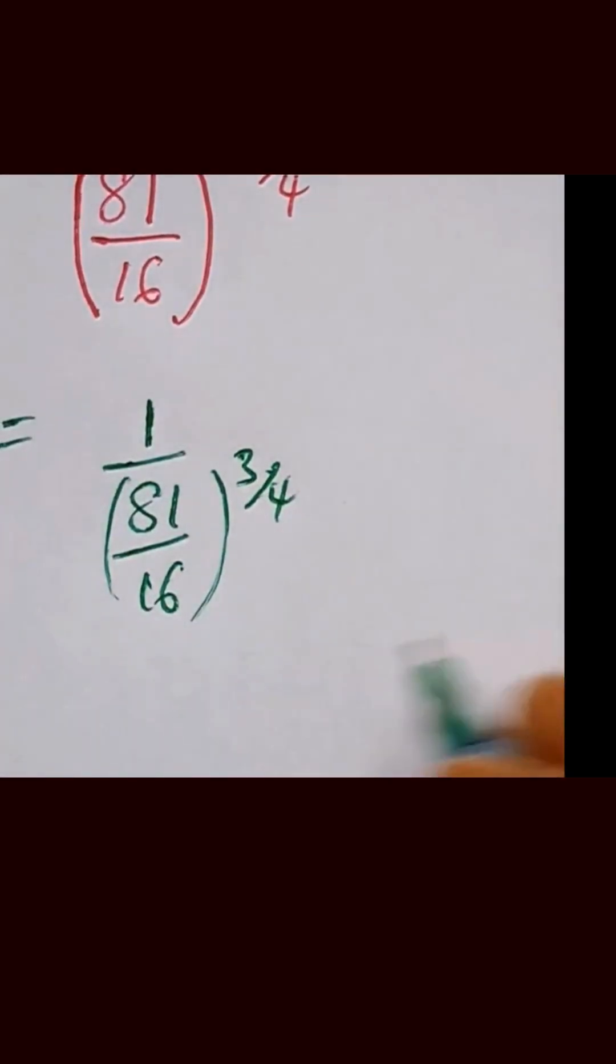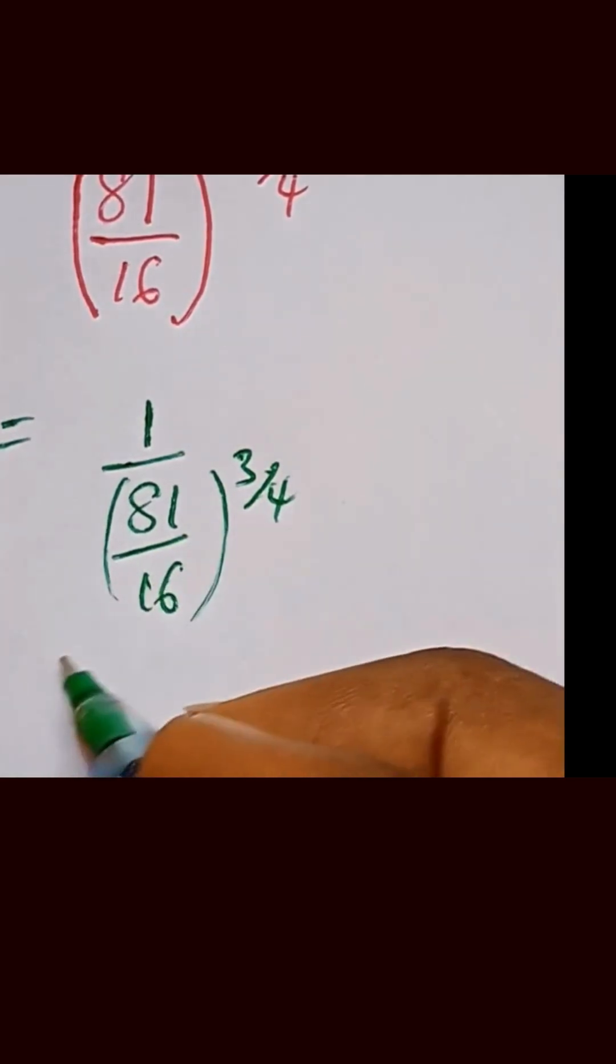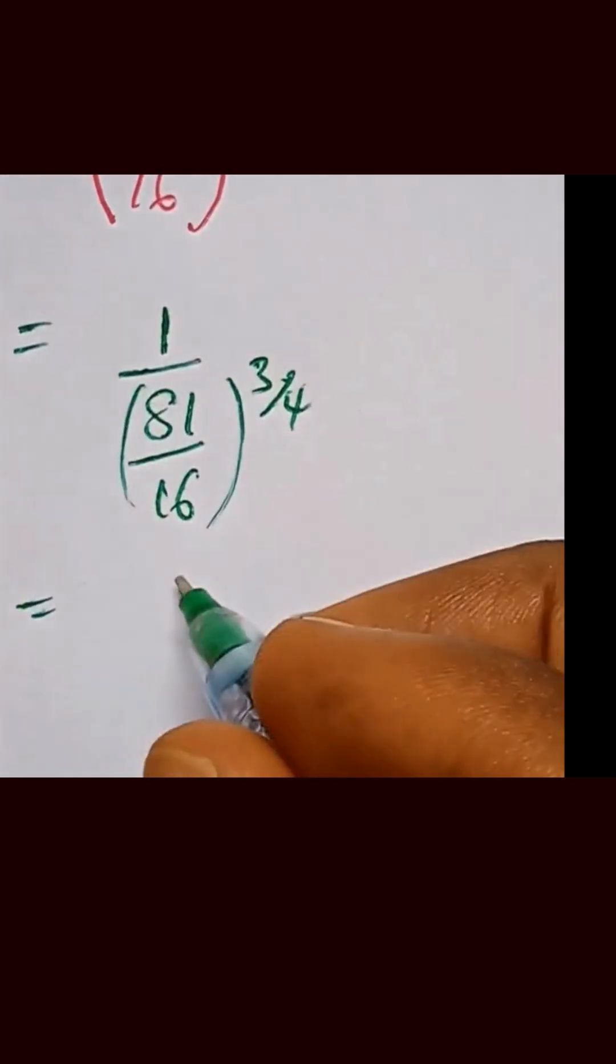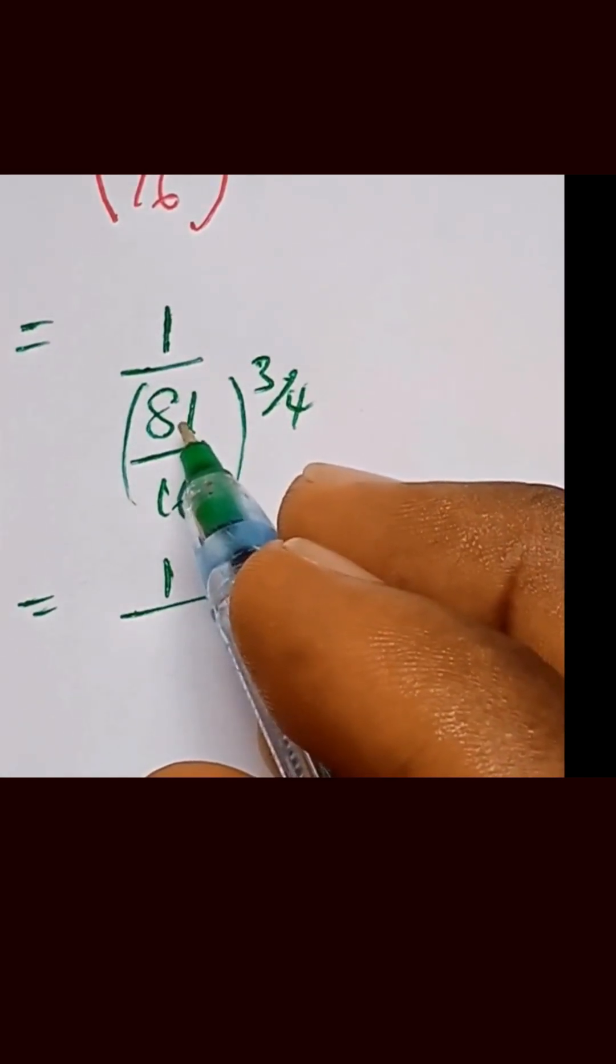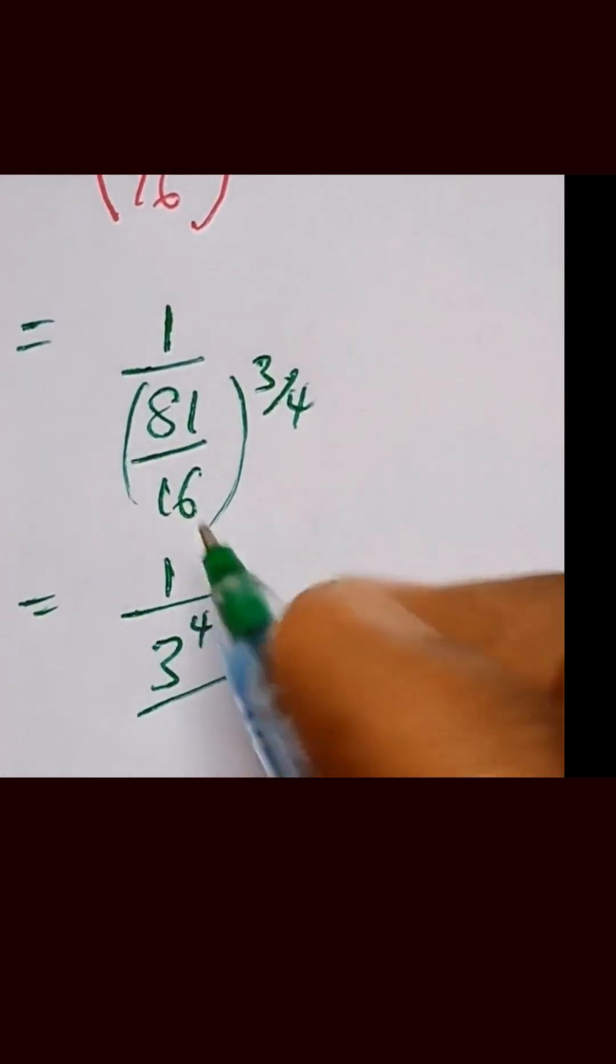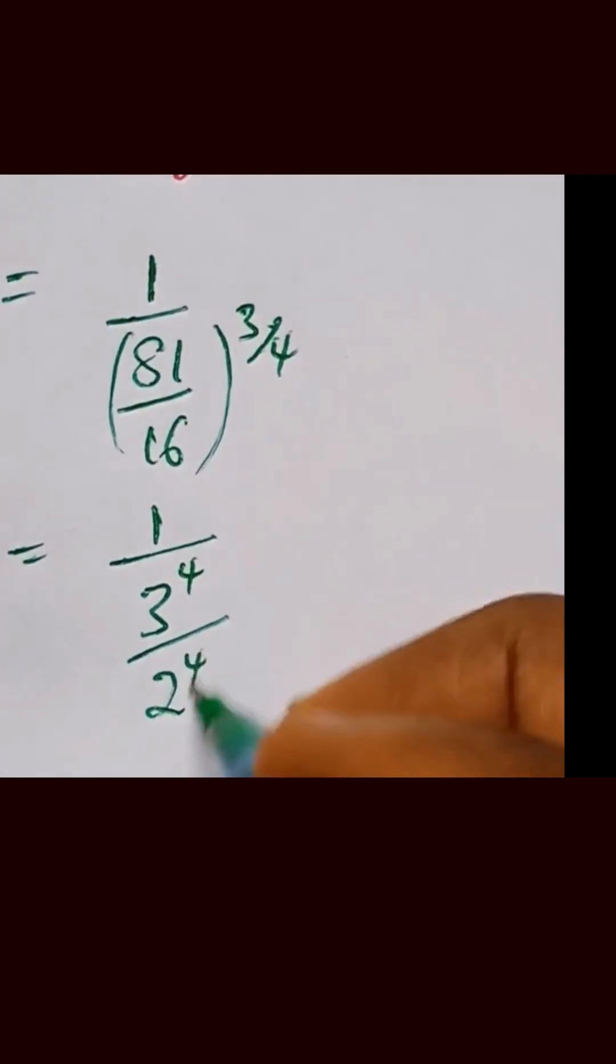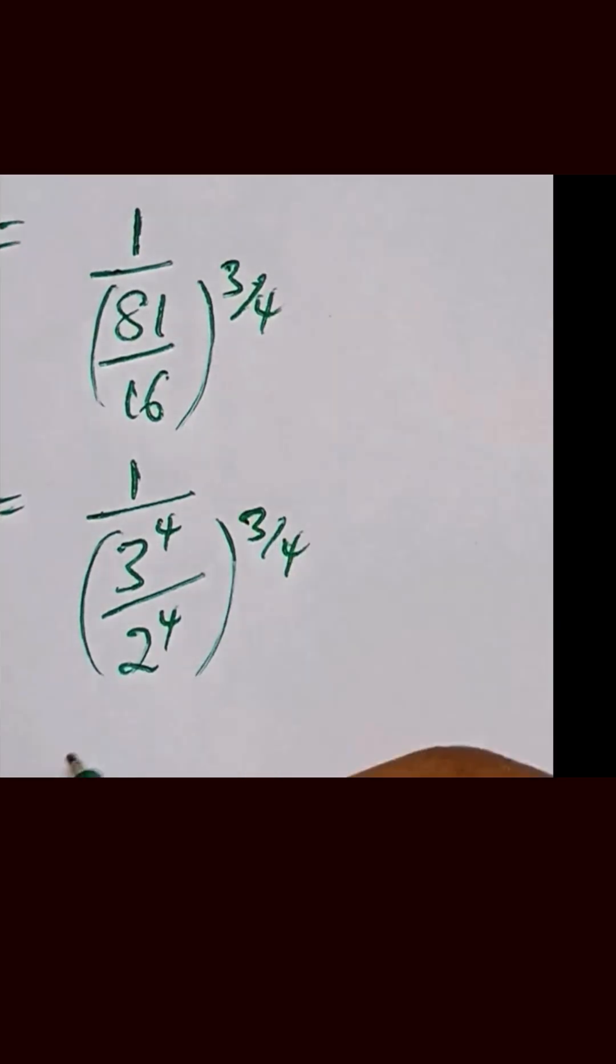So here, we break this down. We simplify this fraction and that will be equal to 1 over, to simplify this 81, we can write it as 3 raised to the power of 4. And this 16, we have it to be 2 raised to the power of 4, raised to the power of 3 over 4.